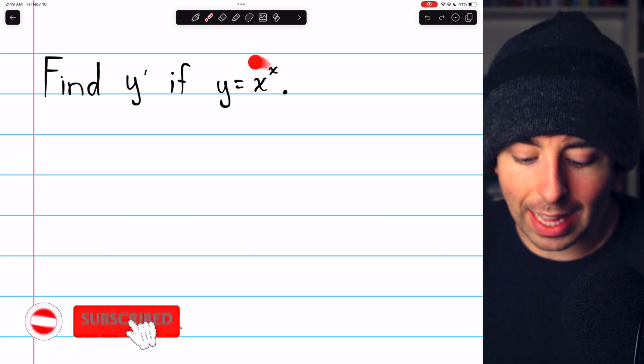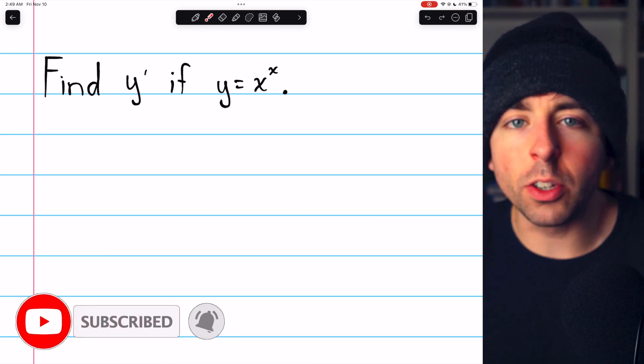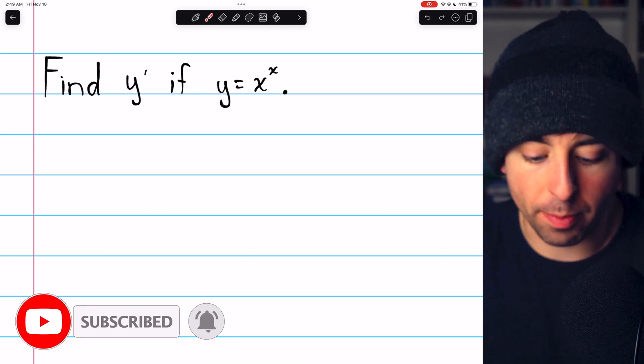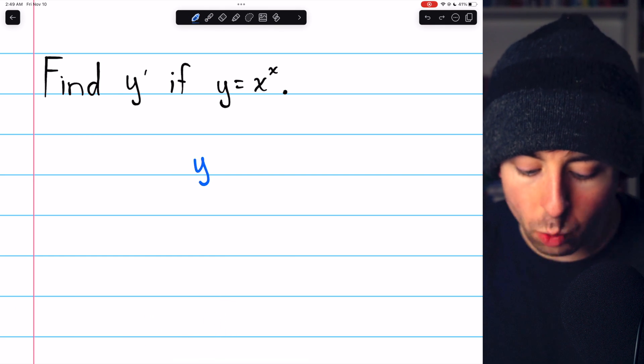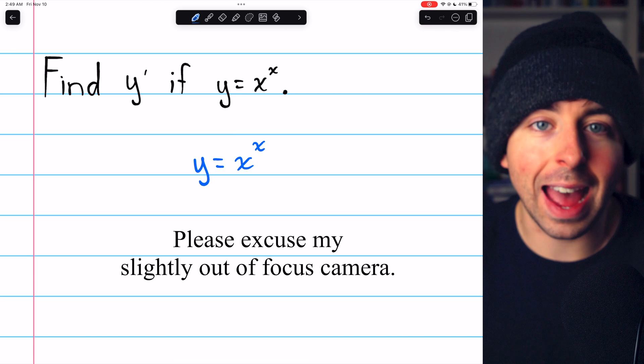To take the derivative of something like x to the x, we can use a technique called logarithmic differentiation. We begin with the equation for y that we know. y is x to the power of x.